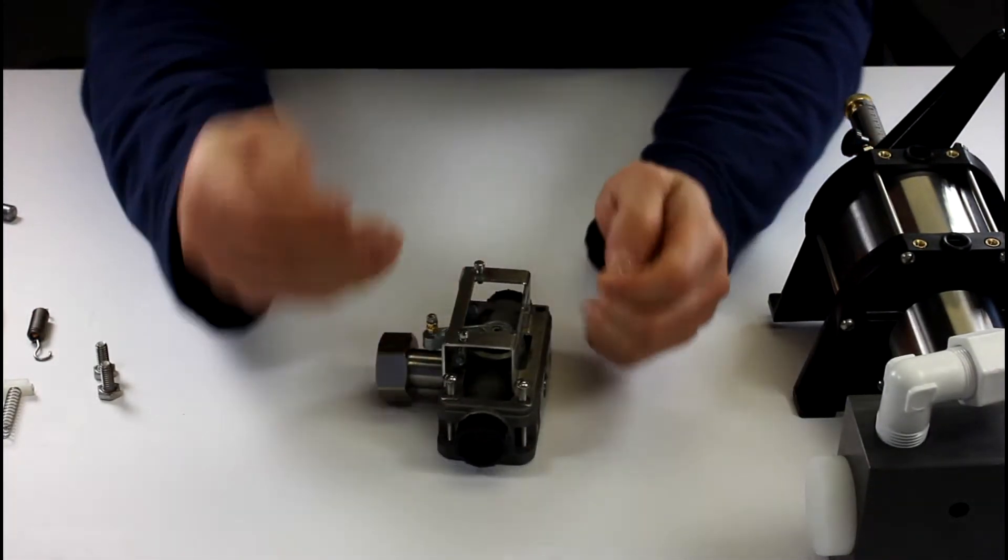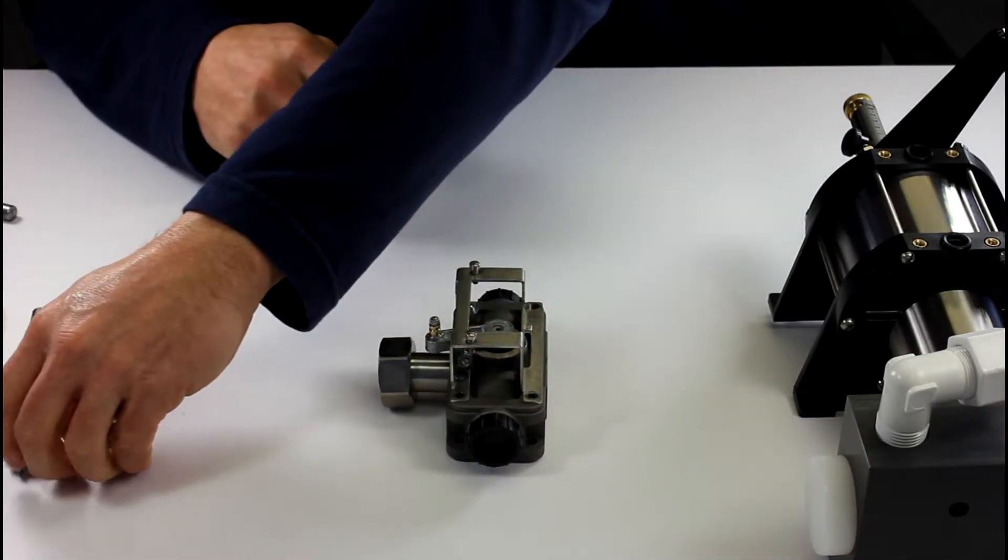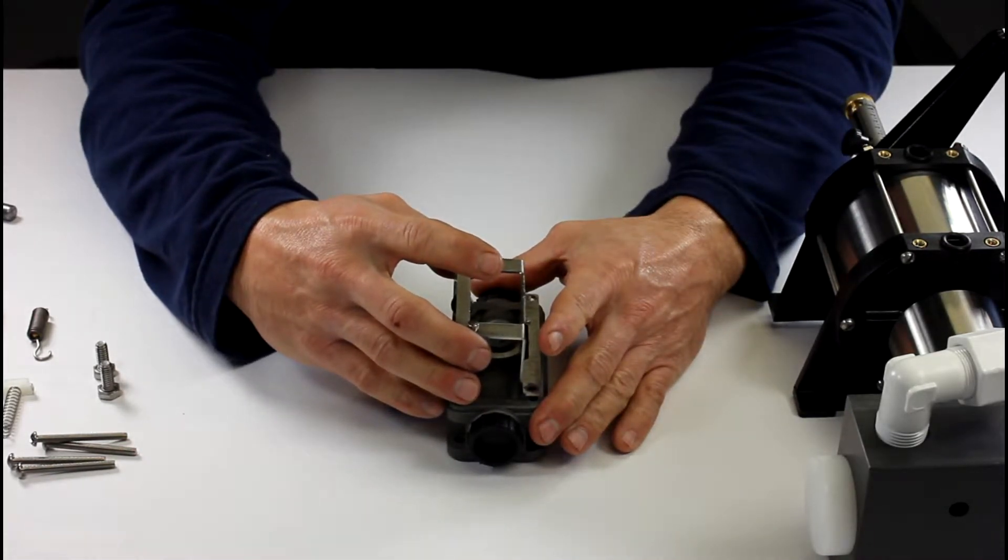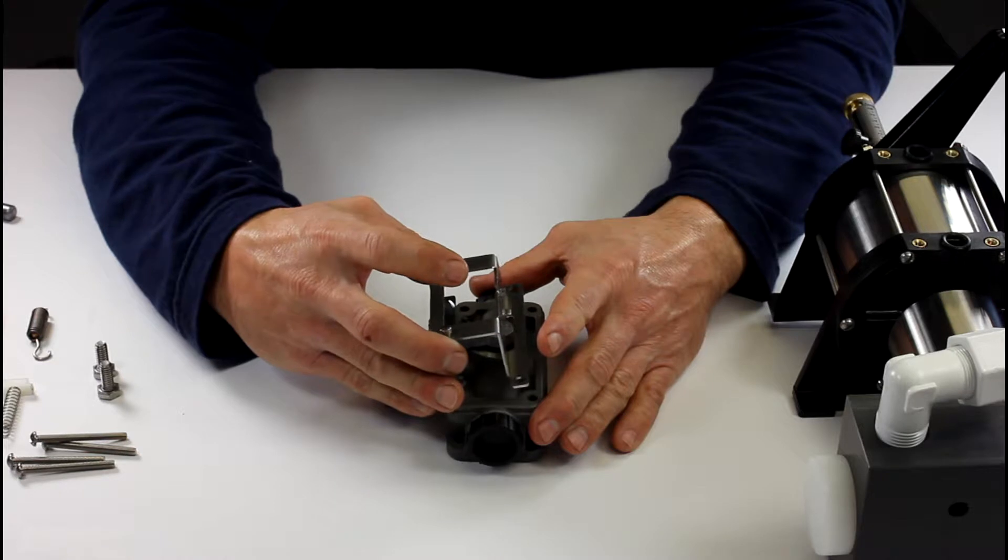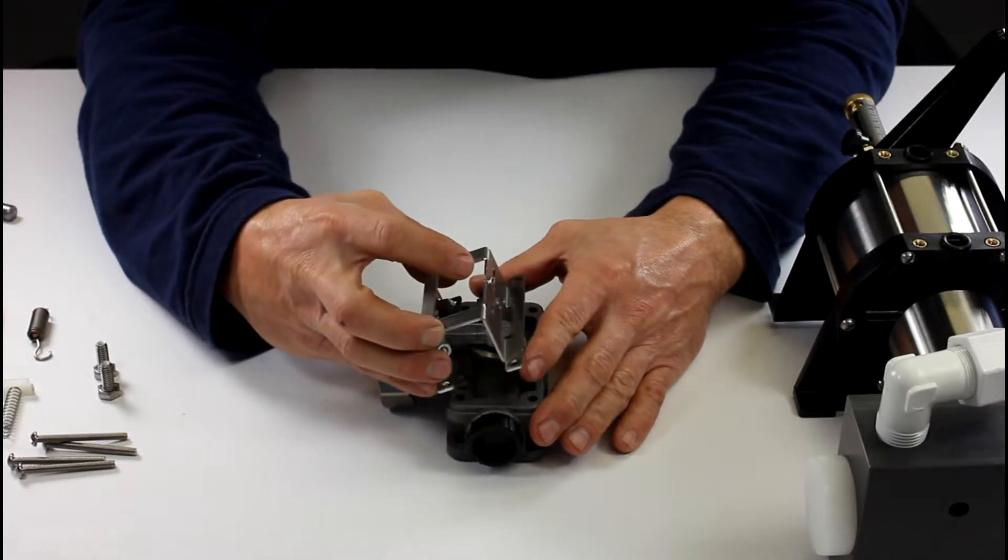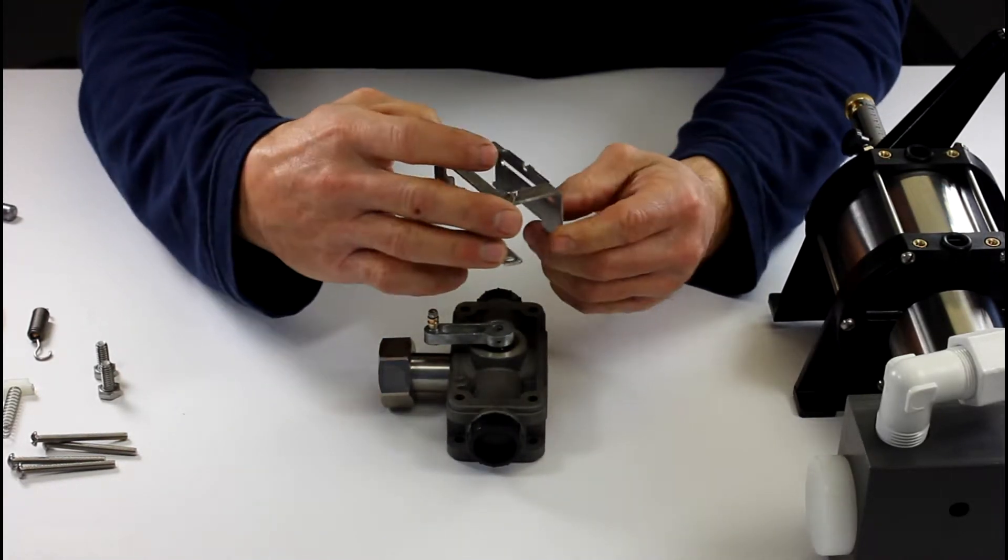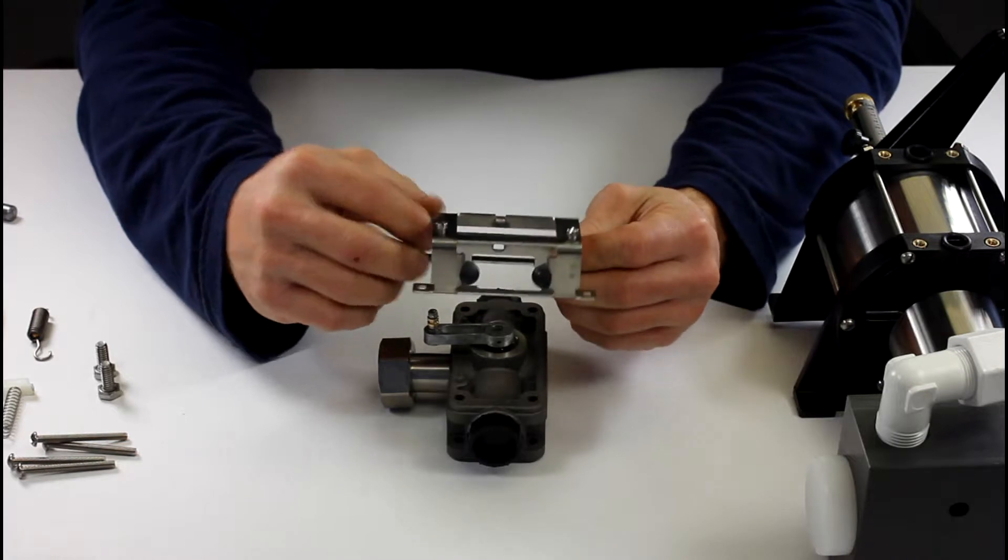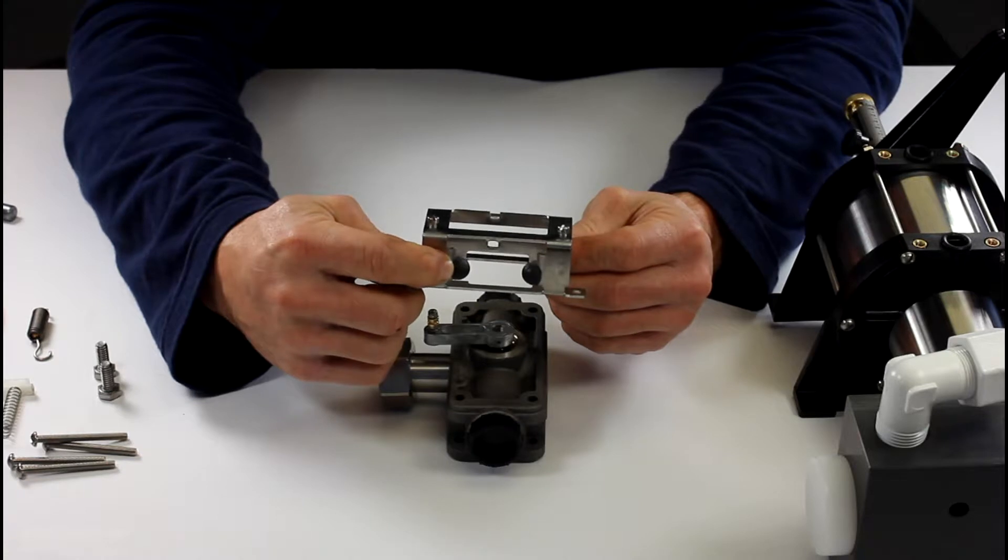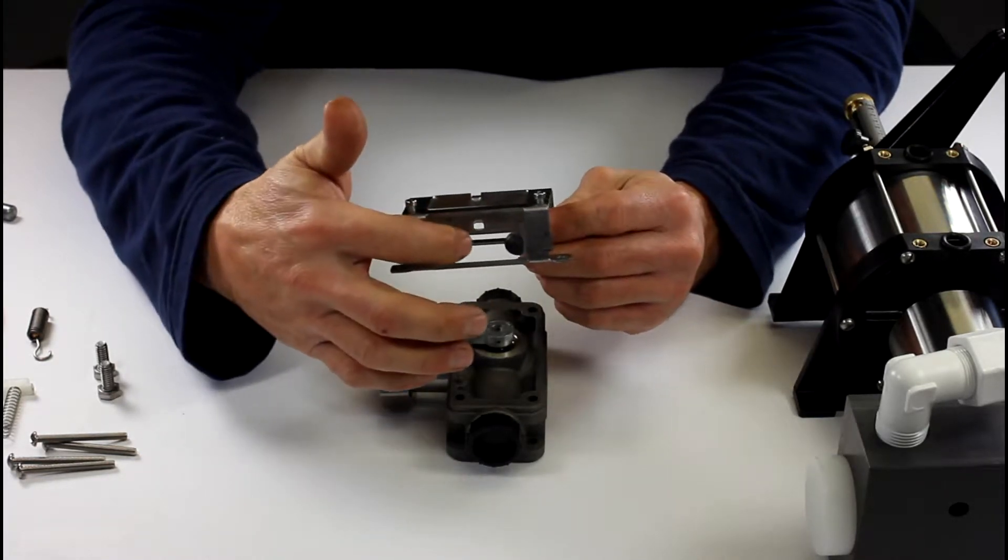Now I'm going to remove my screws out of my reversing rod bracket. You got to lift straight up, tilt it to the right. You have to kind of move that arm, tilt it and up.